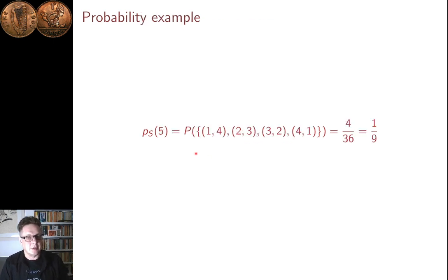So in the case that we're looking at, p_S(5), well, that's the probability of the event that the faces add up to five. So it's the probability of these four things here. There's four of them, they all have equal probability, and so it's four over 36, which is equal to one over nine.